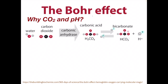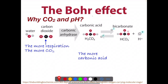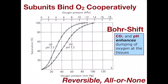So how are carbon dioxide and pH related? It's just simple chemistry. We have water and CO2 produced by respiration — the more we respire, the more CO2 is produced. Carbon dioxide is continually converted by carbonic anhydrase into carbonic acid, which forms an equilibrium with bicarbonate and a proton. The more CO2 we have, the more carbonic acid, and the more protons available. pH is the log ratio of 1 over the concentration of hydrogen atoms, so CO2 acidifies the blood by producing more hydrogen and lowering the pH. Now let's take a look at how the Bohr shift works.